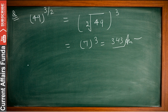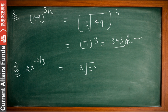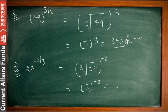Another question: 27 to the power minus 2 by 3. Here, 3 denotes a cube root, so 27 is inside the cube root and the power is minus 2. The cube root of 27 is 3, so we get 3 to the power minus 2, which equals 1 by 3 squared, so the answer is 1 by 9.